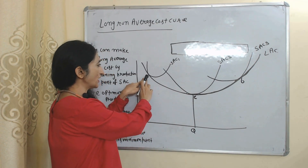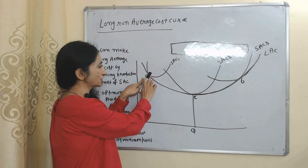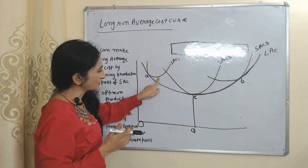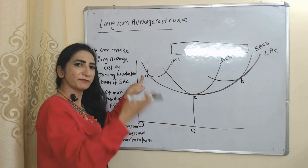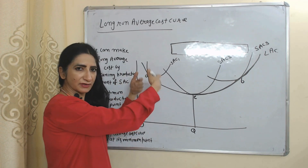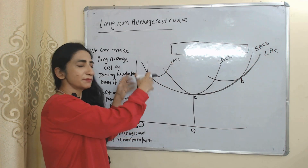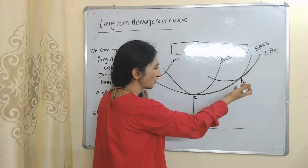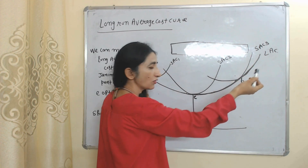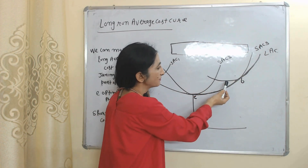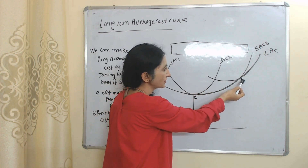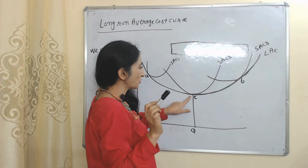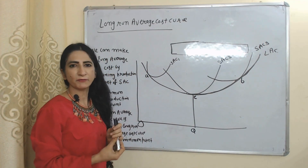A is not the optimum production point because at A, the short-run average cost curve touches the long-run average cost curve before its minimum point — meaning it still has capacity but stopped before reaching minimum. B cannot be the optimum level either, because at B the short-run average cost curve touches the long-run average cost curve after its minimum point. Therefore, E is the only optimum production point and OQ is the optimum level of output.